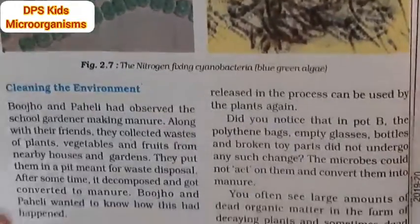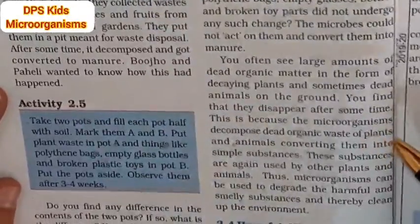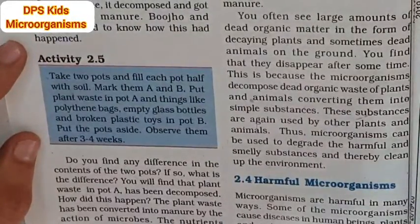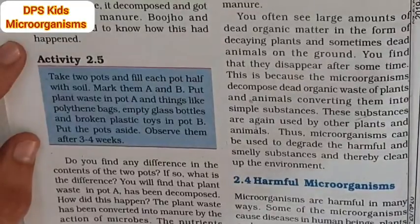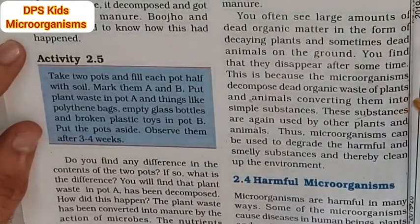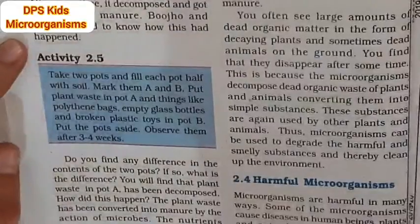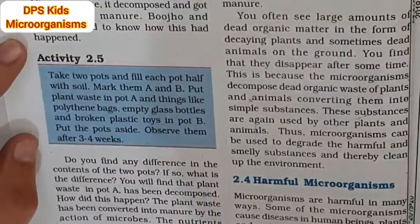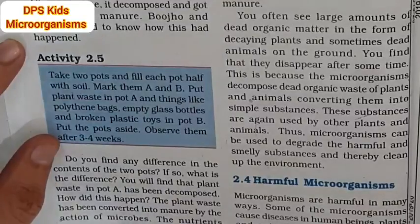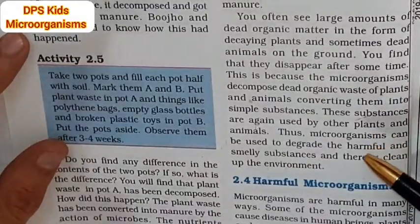You often see large amounts of dead organic matter in the form of decaying plants and sometimes dead animals on the ground. You will find that they disappear after some time. This is because the microorganisms decompose dead organic waste of plants and animals, converting it into the soil. Some microorganisms decompose dead organic waste into simple substances that are then used by other plants and animals.